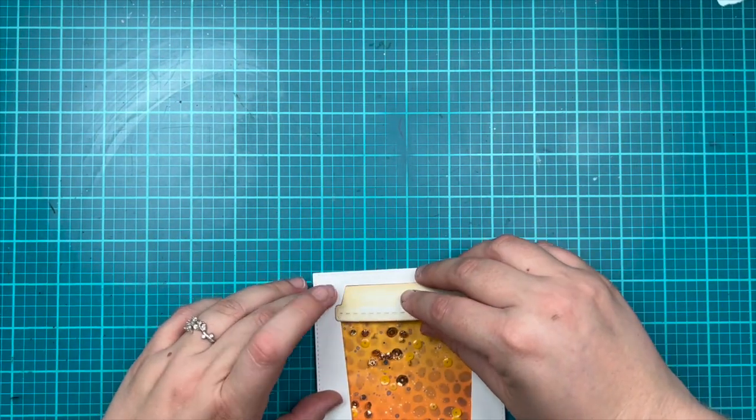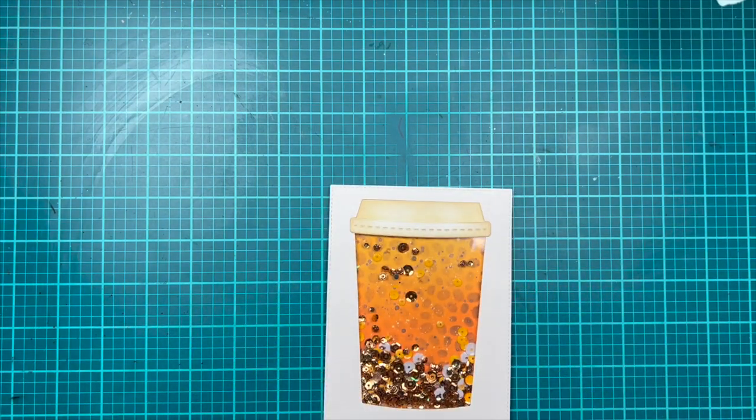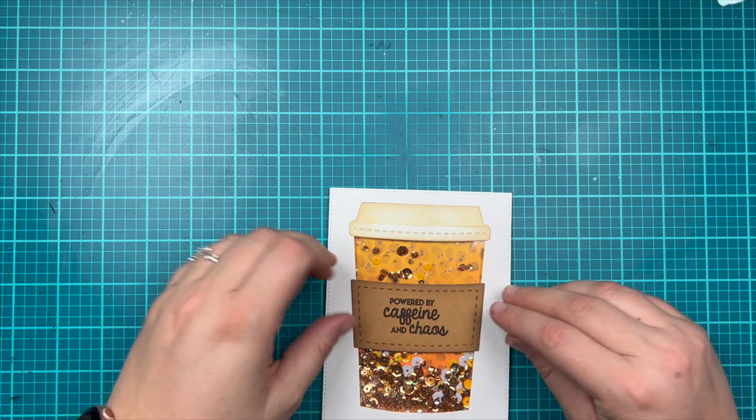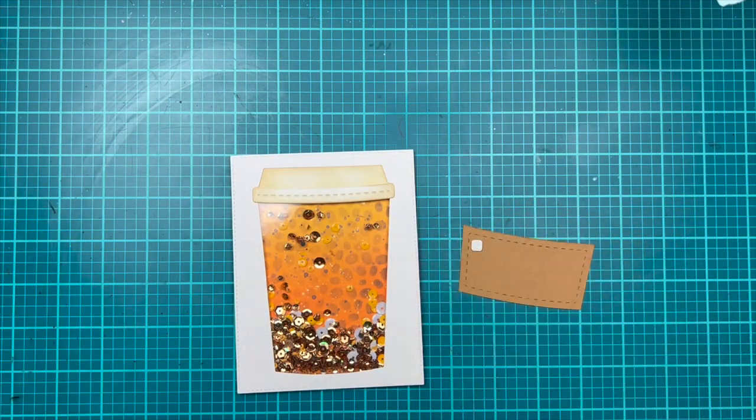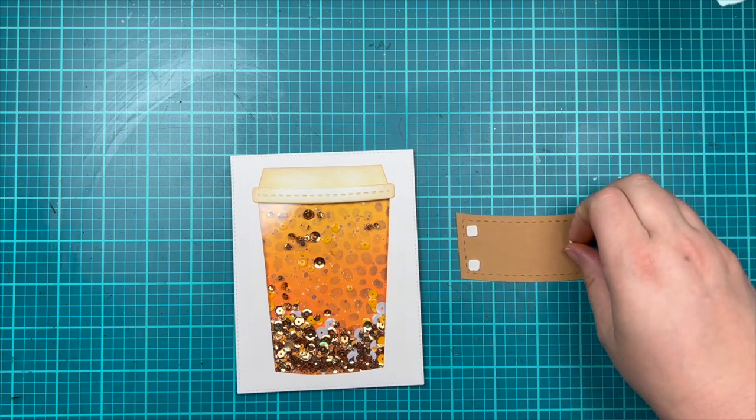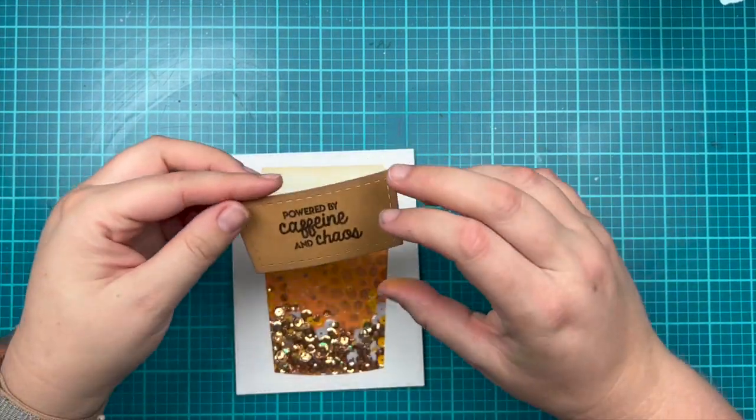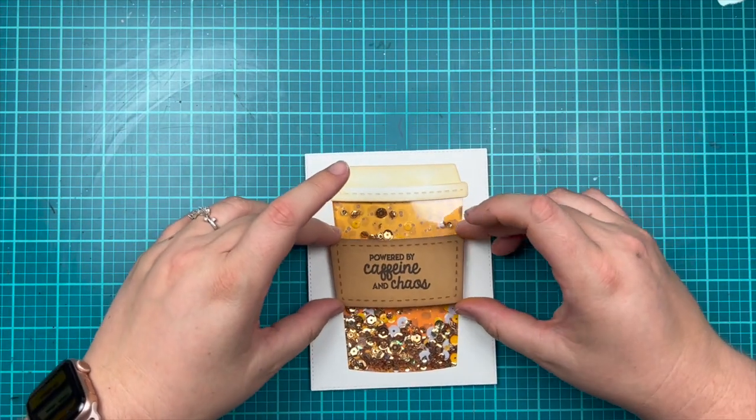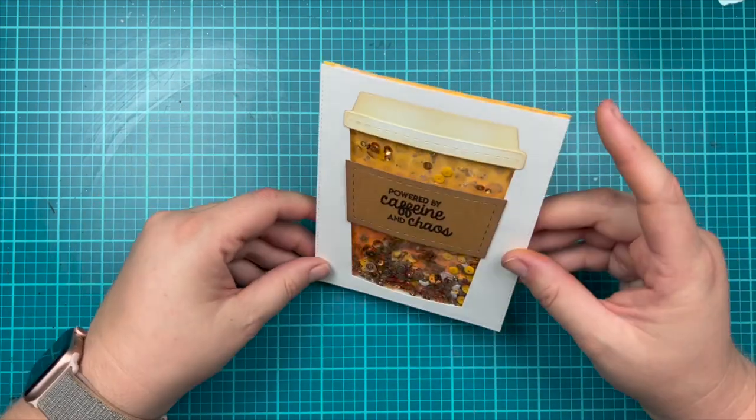I'm adding some glue from my Gluebert to glue that inside of the die cut, so I have my lid, and then I'm going to adhere on my coffee sleeve with the sentiment. This time I'm going to use some really thin foam adhesive. I love my Heffy foam adhesive but it does make the card a little thick and I didn't want to add more thickness, so I used some really thin foam adhesive to glue that down.